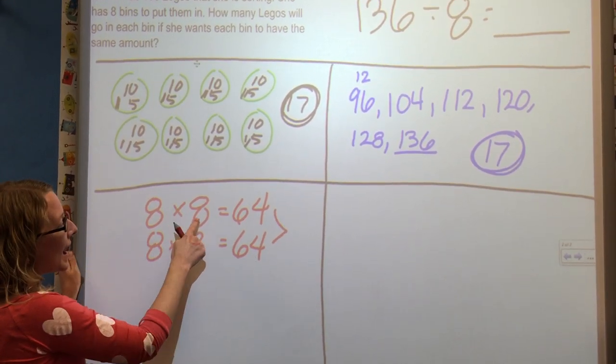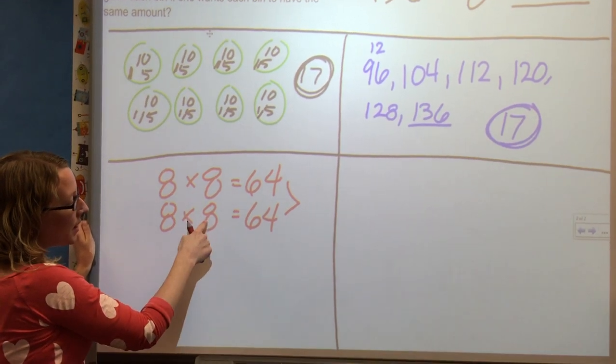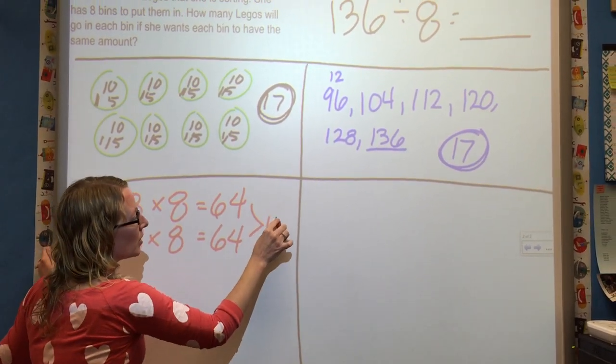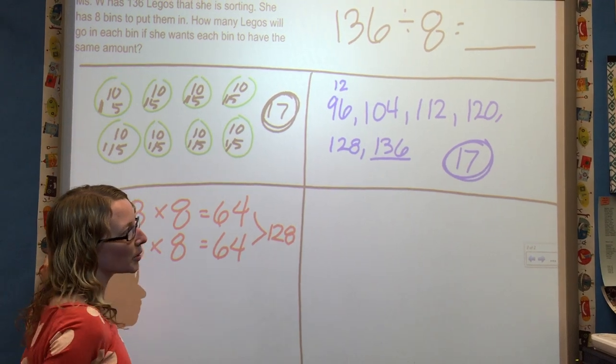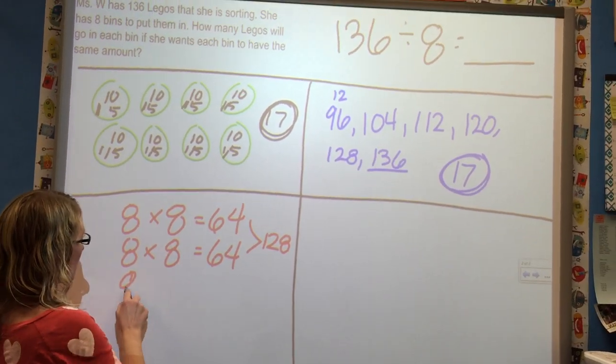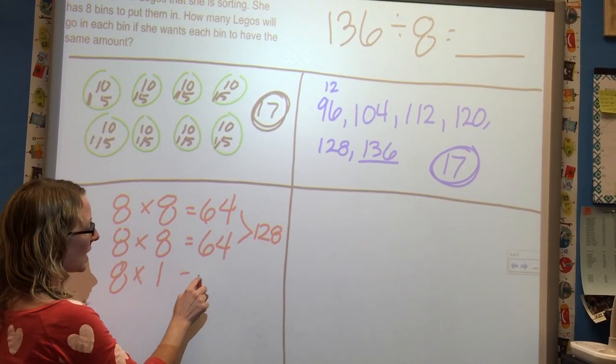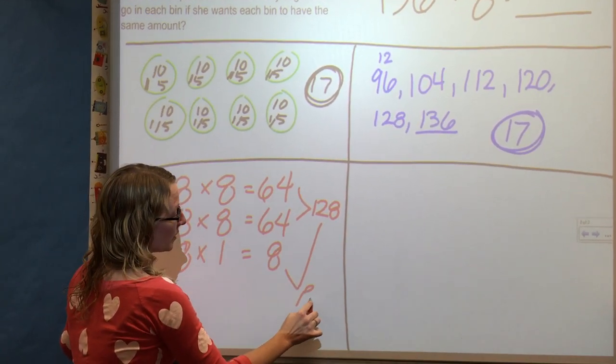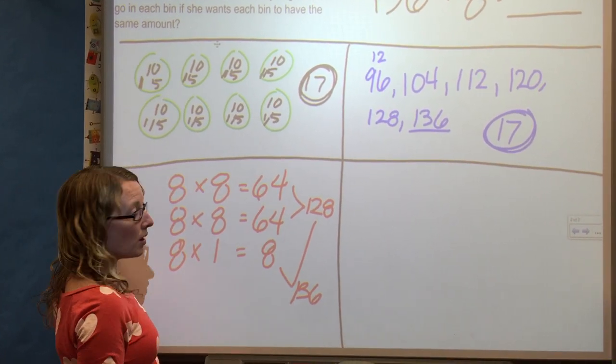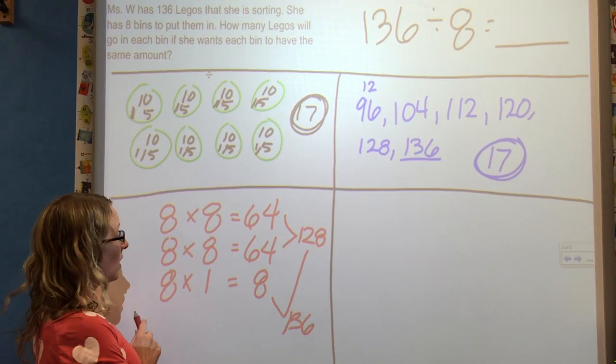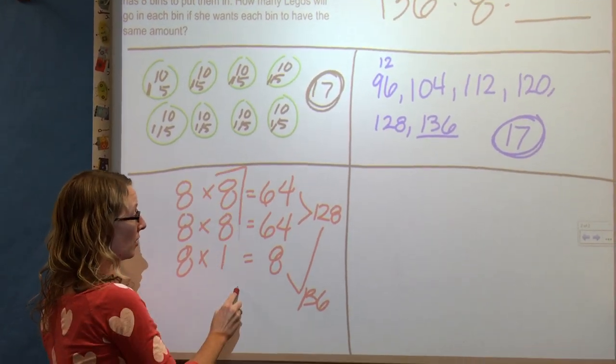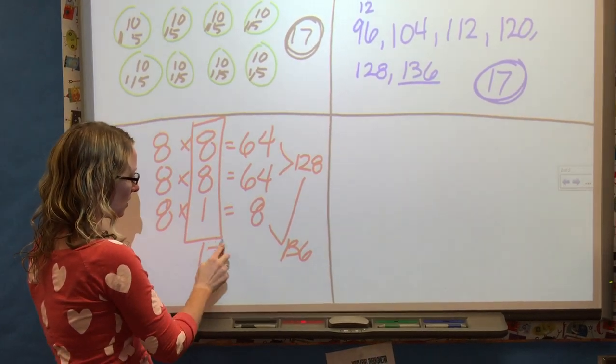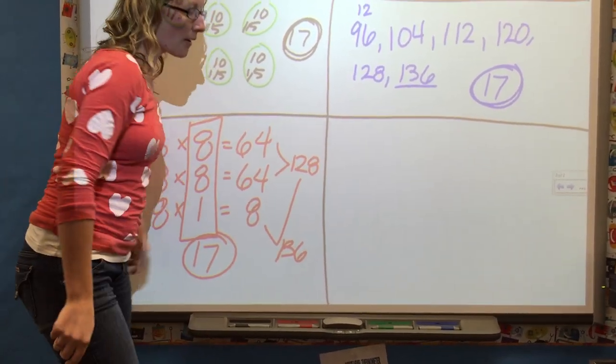And how many Legos? So, if we were putting 8 bins, 8 Legos in each bin, another 8 Legos in each bin, that's 64 and 64. How much is that total? 128. Oh, we're super close. Yeah. So, we can just do one more group of 8. 8 times 1. That's 8. And then that total plus that. 136. 136. Woo! Okay. So, how many, how many 8s did we have? 17. 17. 8 and 8 and 1 is 17. Okay. Cool.